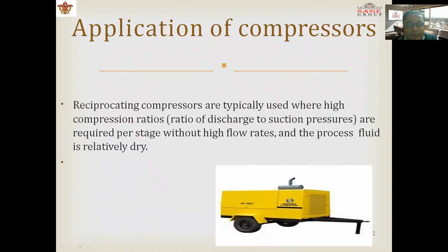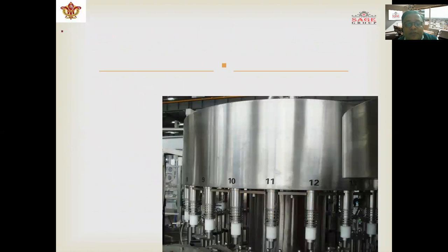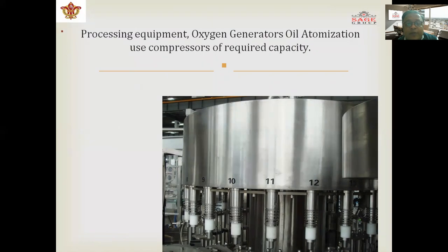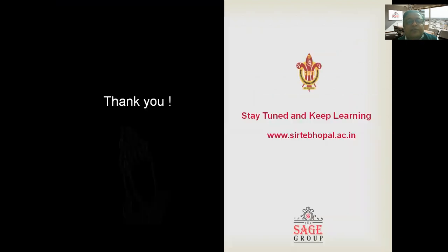Reciprocating compressors are typically used where a high compression ratio — the ratio of discharge to suction pressure — is required at a relatively low flow rate, and the process fluid is relatively dry. The bottling industry and sewer industry also use reciprocating air compressors. Other applications include processing equipment, oxygen generators, and oil atomization, each requiring compressors of specific capacity. For high-pressure generation, multi-stage compression is used, which will be discussed in the next class.